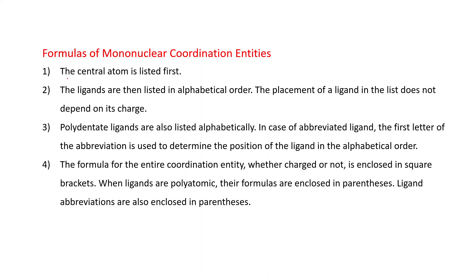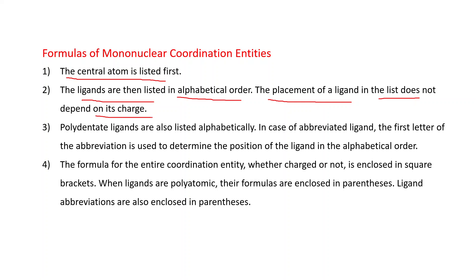The first rule is the central atom is listed first. This is just opposite to naming — in naming, we first write the ligands and then the metal atom, but here we list the central atom first. The ligands are then listed in alphabetical order. The placement of a ligand in the list does not depend on its charge; we list ligands alphabetically regardless of charge. Polydentate ligands are also listed alphabetically.